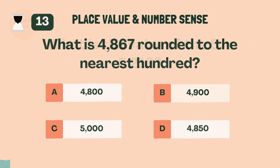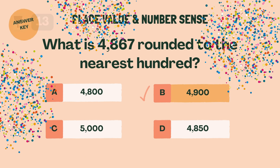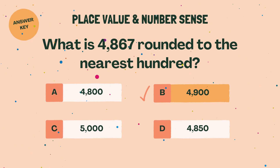What is 4,867 rounded to the nearest hundred? B. 4,900.